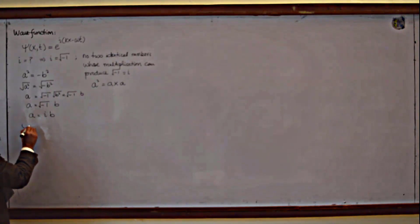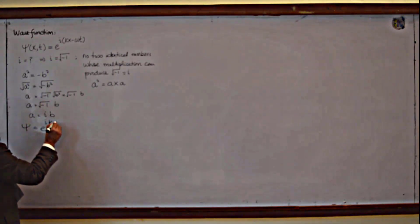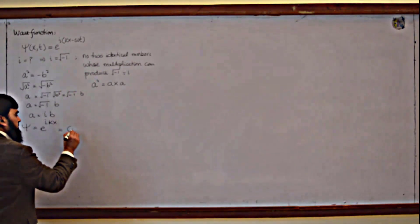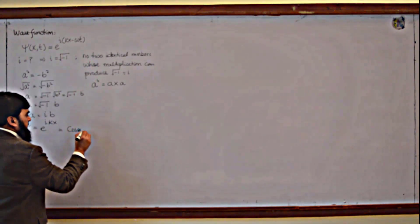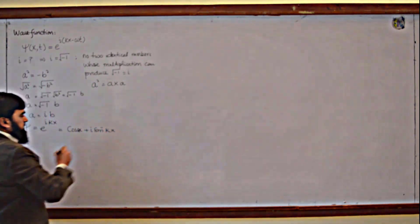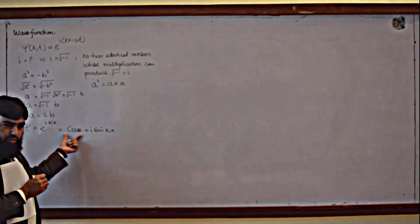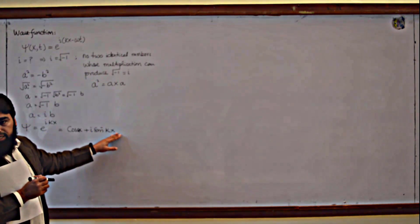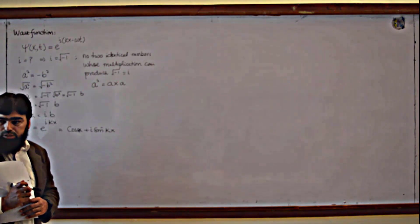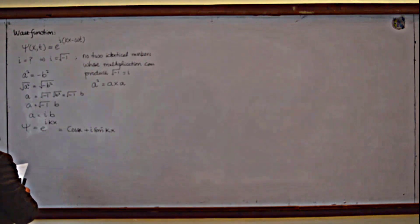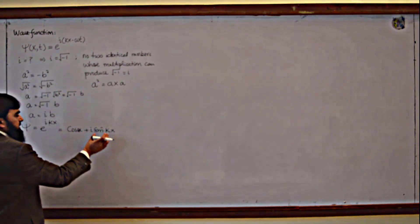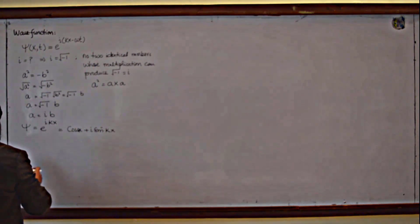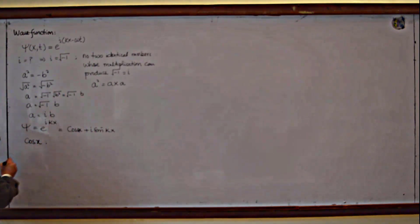Now if I write ψ = e^(ikx), using Euler's formula, this equals cos(kx) + i·sin(kx). Here cos is real and sin(kx) is real, but this 'i' makes the second term imaginary. And this imaginary component has something to do with absorption. So why not write the wave function as only cos(kx)? Because those are periodic functions — we need to examine what role the imaginary part plays.